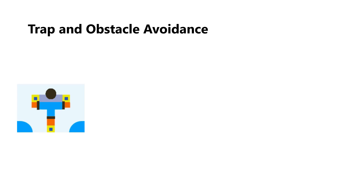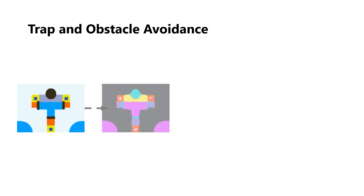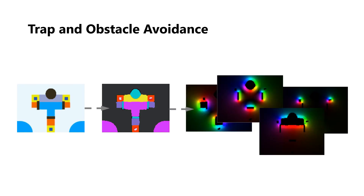Starting with a screenshot of the arena map, OpenCV techniques are used to classify the pixels of each landmark. Converting to the HSV color space, we obtain a neat visualization as shown. Hue corresponds to magnitude while saturation corresponds to angle.